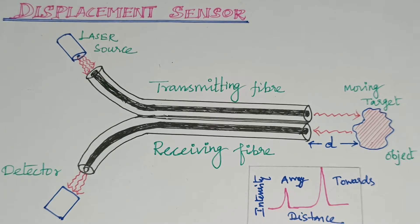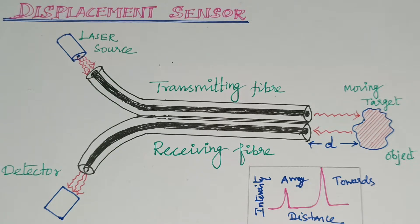Welcome. Now we have discussed about the Displacement Sensor. This is from the Fiber Optics Unit. Already we have discussed about the Intrinsic Sensor or Active Sensor, that is the Pressure Sensor. Now we have discussed about the Extrinsic Sensor or Passive Sensor.